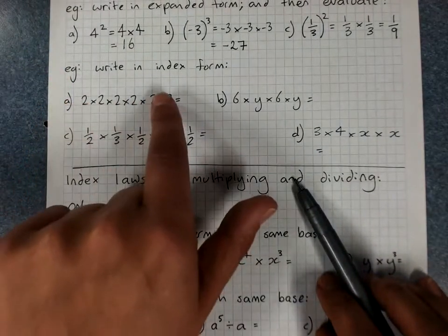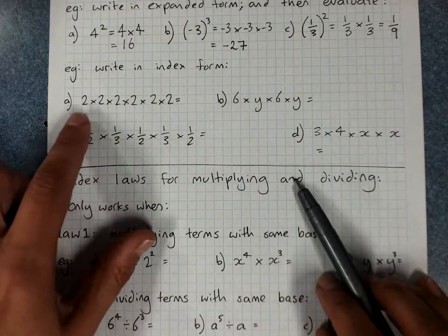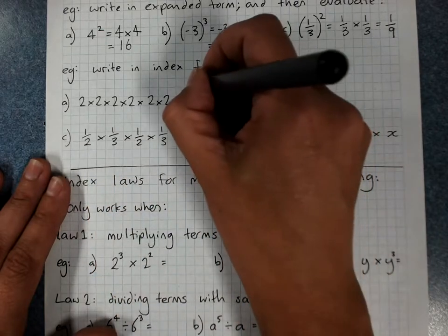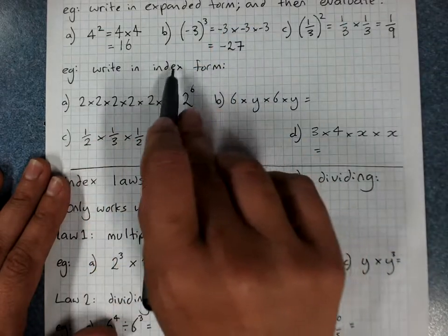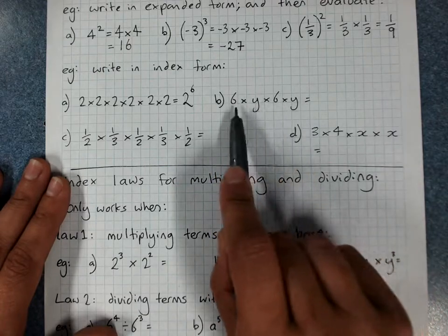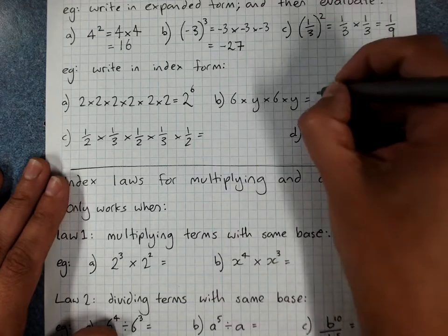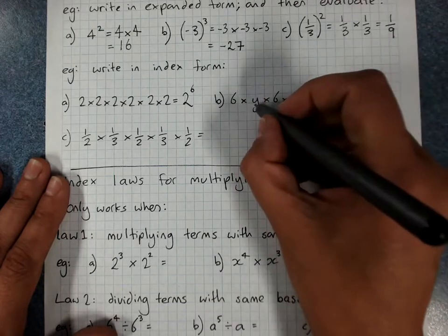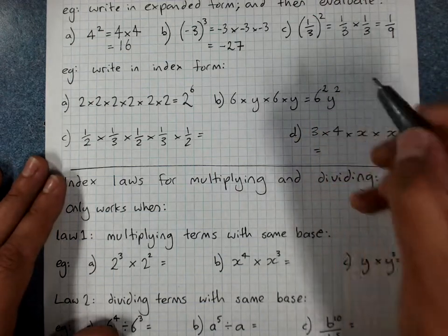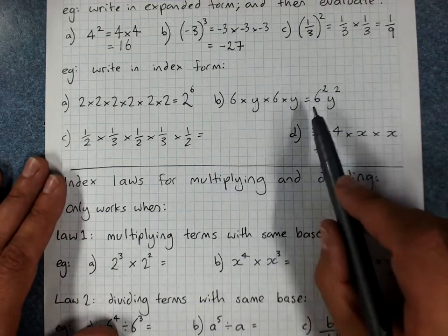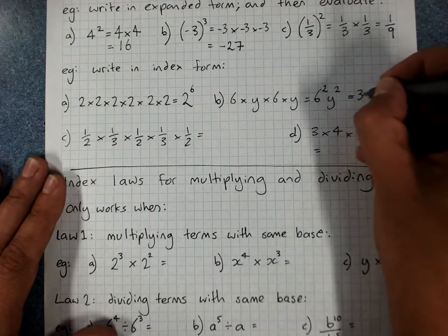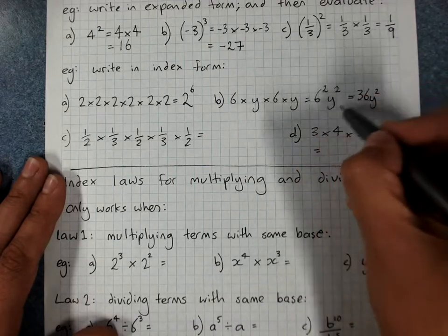We also need to go from expanded form back to index form. Here, the base number is 2 and it's been multiplied together 6 times, written as 2 to the power 6. Sometimes terms are mixed — group like bases together: 6 × 6 is 6 squared, and y × y is y squared. In algebra we remove the times sign, so this is just 6 squared y squared. We could also evaluate the 6 squared to get 36y squared.